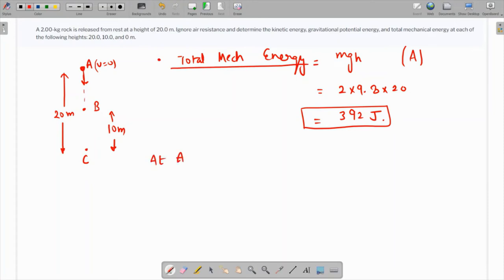Now at A we will talk about the gravitational potential. So potential energy is the same as what we found over here and kinetic energy is zero because it is released.